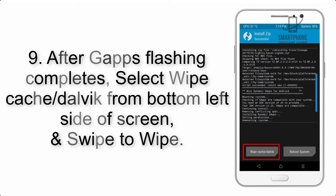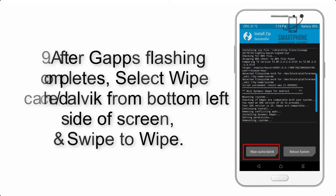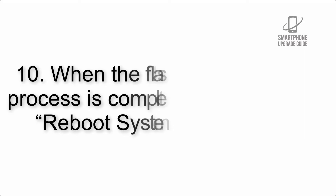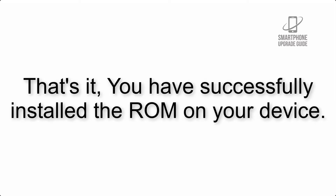Step 8: Flash the G apps zip package in the same manner. Step 9: After G apps flashing completes, select Wipe Cache and Dalvik from the bottom left side of the screen and swipe to wipe. Step 10: When the flashing process is complete, hit Reboot System. That's it — you have successfully installed the ROM on your device.